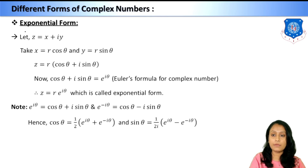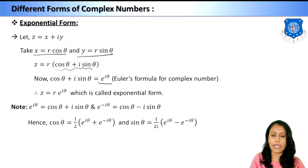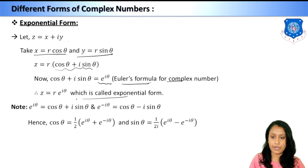The next form is the exponential form. Let z = x + iy. Taking x = r cos θ and y = r sin θ and factoring out r gives z = r(cos θ + i sin θ). We know that cos θ + i sin θ = e^(iθ), which is Euler's formula for complex numbers. So z = re^(iθ) is the exponential form of a complex number.